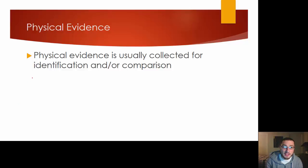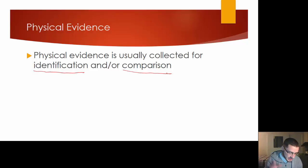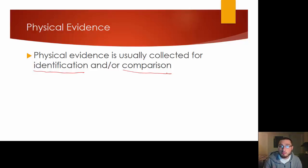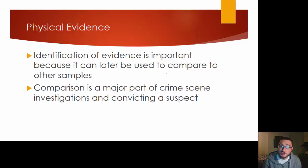Physical evidence is usually collected for identification and/or comparison, and in this chapter you want to know the difference — they are not one and the same. Identification is actually identifying that substance with near absolute certainty. Comparison is finding something so we can make connections — ultimately comparing two different things. You might be able to compare two different things without identification. Identification of evidence is important, but comparison is a major part of crime scene investigation and convicting a suspect.